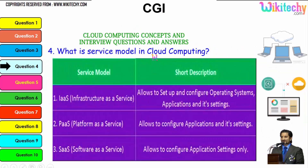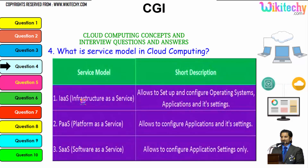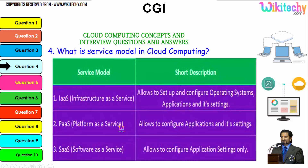Now, what is the service model in cloud computing? There are three major service models. The first is Infrastructure as a Service, which allows you to set up and configure the operating system, applications, and settings — you are given a server and can install whatever operating system you want. The second is Platform as a Service, where you are allocated a specified operating system and can install any applications. The third is Software as a Service, where you are given software and can configure application settings.